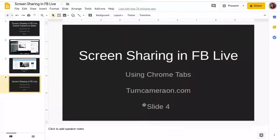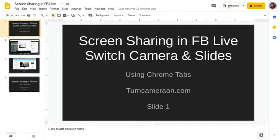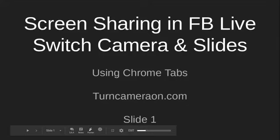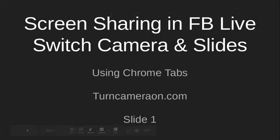Now I found a simple solution that I hope is going to help you create your Facebook Lives alternating between the camera and slides. I created this presentation on Google Drive, and that's one of the tabs I have in Chrome. I open the tabs I need — one is Facebook, another is the camera, and the other is the slide — and it's just a matter of alternating between tabs.